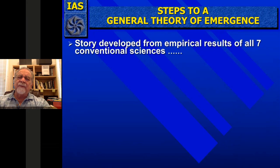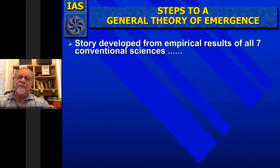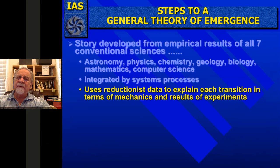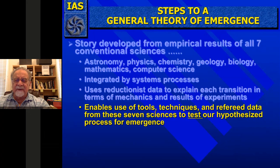The story developed from the empirical results of seven conventional sciences — astronomy, physics, chemistry, geology, biology, math, and computer science — integrated by systems processes. We were sponsored and paid for by the National Science Foundation, Department of Education, and several other groups to use reductionist data to explain such transitions in terms of their mechanics. It enables the use of tools, techniques, and refereed data from these seven sciences to test our hypothesized process for emergence.